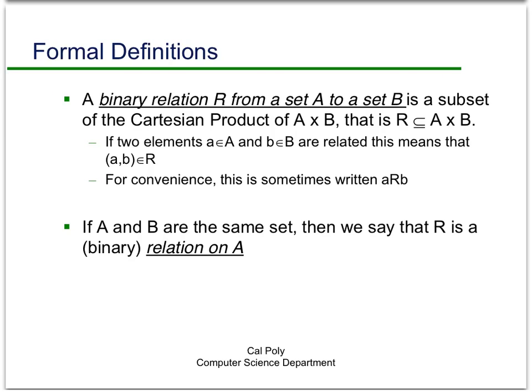An even more special case that we'll see a lot is when A and B are the same set. Then we say that R is a binary relation on A — and usually we leave off the word 'binary,' since it just refers to the fact that there are two sets — so we'll just say that R is a relation on A.